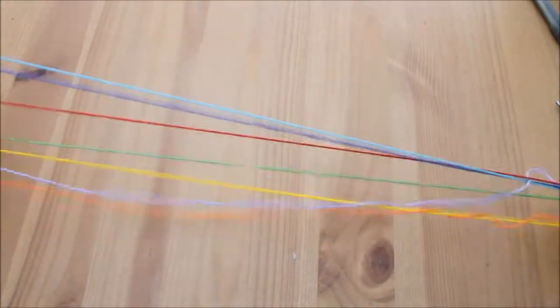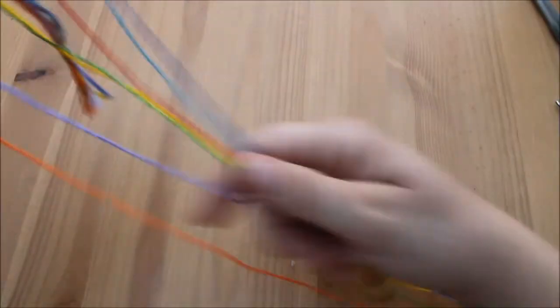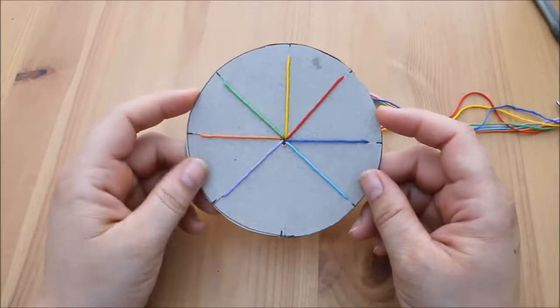And just make sure that all your ends are untangled and free of any knots. So because we've got seven pieces of yarn, we've got a groove missing.